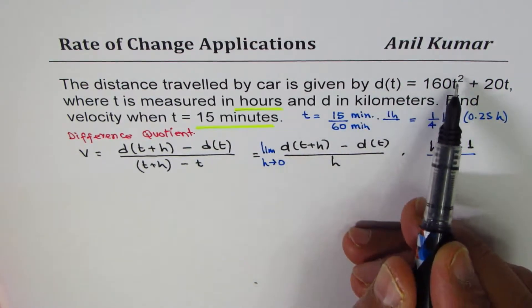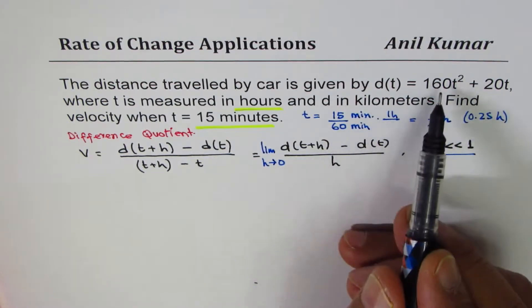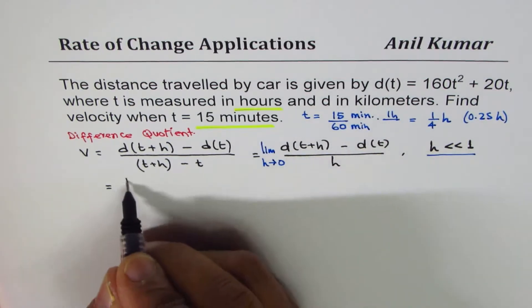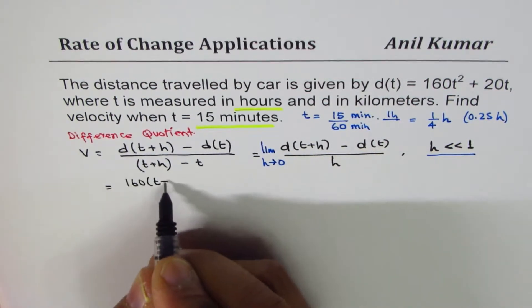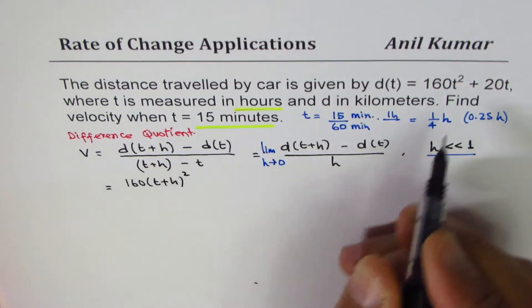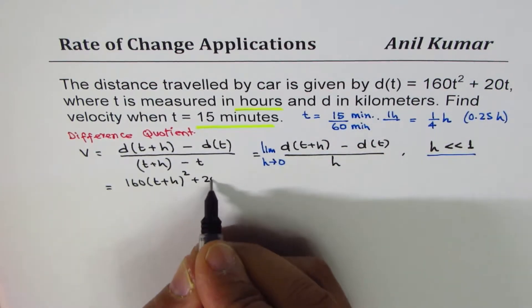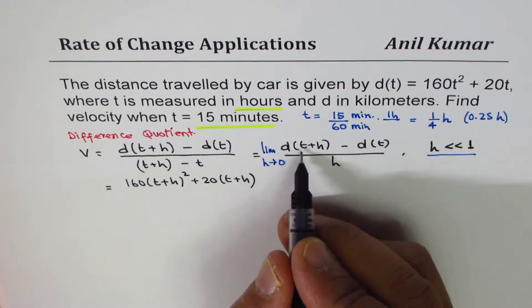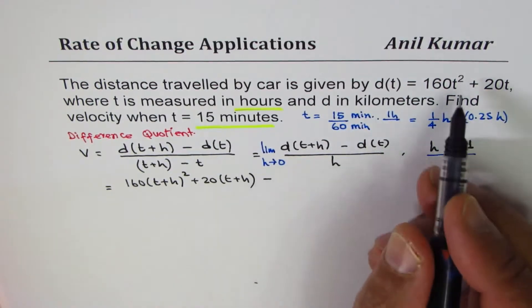Let's now begin by finding these two functions. We are given d(t) = 160t² + 20t. I replace t by t plus h. So we get 160(t+h)², so that gives me the first function.